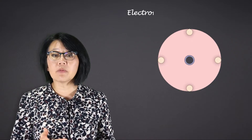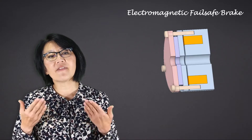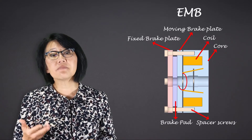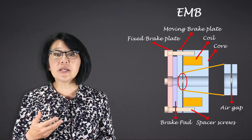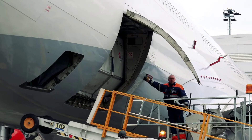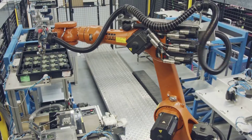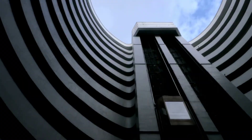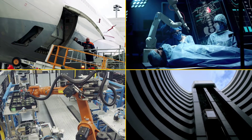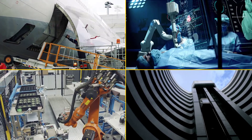The example we'll be discussing here is an electromagnetic brake, or more specifically an electromagnetic fail-safe brake, EMB for short. EMBs are used in many applications including aircraft cargo door actuation systems, robotic surgery arms, commercial robots, lifts, and elevators. Depending on the application and use, they are implemented in different ways.